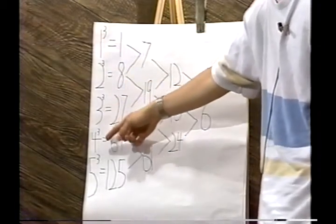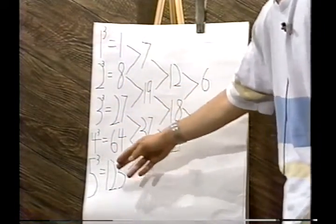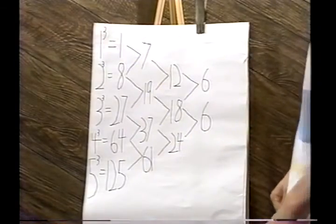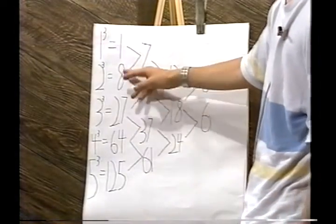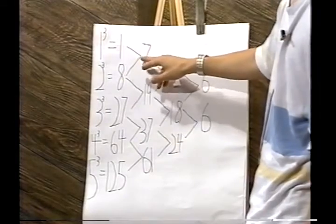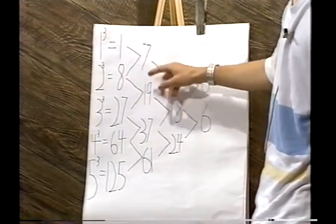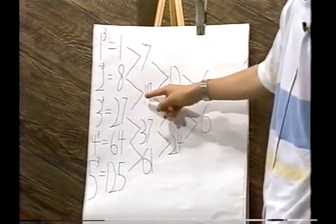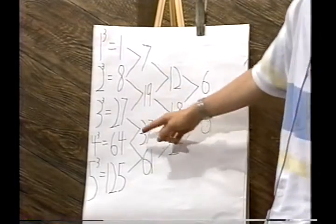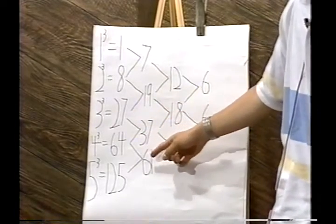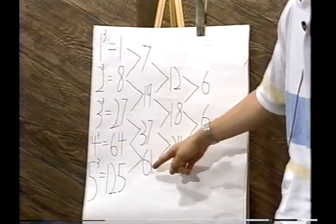If you have powers of three—one cubed, two cubed, three cubed, four cubed, five cubed, and so on. I only went up to five here. You can take the differences of those. These are the actual numbers for the cubes, and then these are the differences. Eight minus one makes seven. Twenty-seven minus eight makes nineteen. Sixty-four minus twenty-seven is thirty-seven, and one twenty-five minus sixty-four is sixty-one.